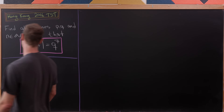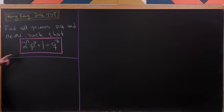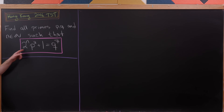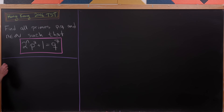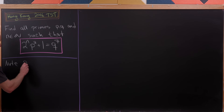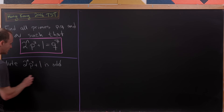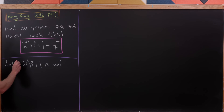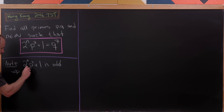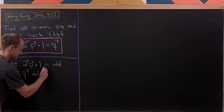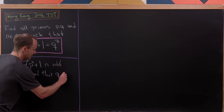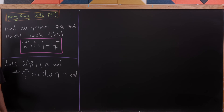Since N is bigger than or equal to 1, 2 to the N is even. So 2 to the N times P squared is even, meaning 2 to the N times P squared plus 1 is odd. That tells us immediately that Q to the 7, and thus Q itself, is also odd.